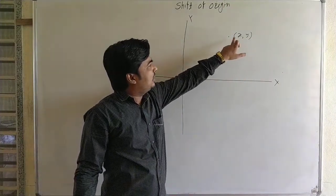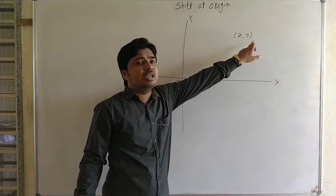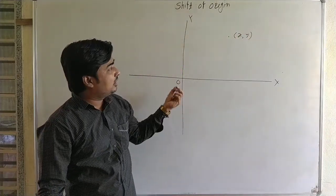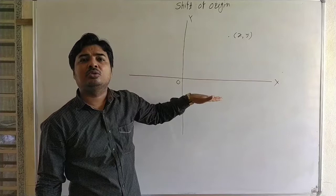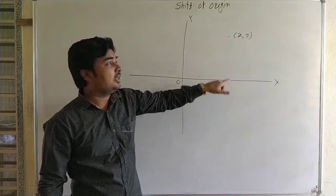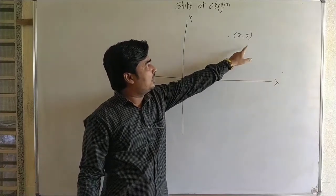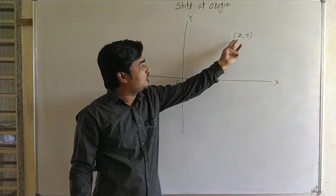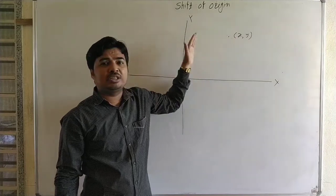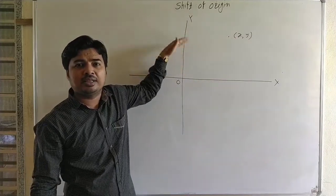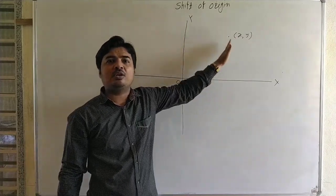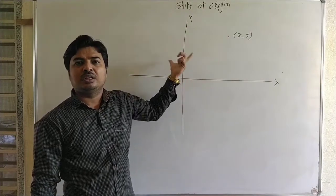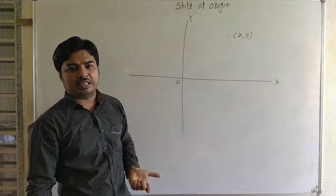The coordinates of a point are the distances of that point from the coordinate axes. The x-coordinate is the distance of the point from the y-axis, and the y-coordinate is the distance of the point from the x-axis.